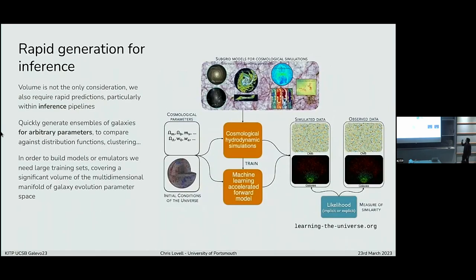The other thing we'd like to be able to do is to use these machine learning models for inference. We want to rapidly generate galaxy populations, not only from a single machine learned input training set, but also for a range of different parameters. So we need large training sets that cover a significant volume of this multidimensional parameter space.